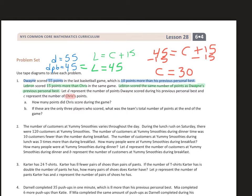There's lots of information, and it really is a lot easier if you just go one step at a time and you write things down. They gave us Dwayne scored 55 points, but then they decided to say let D represent the number of points Dwayne scored during his previous personal best. So I did DPB for that, and since it was 10 points more than his previous personal best, that means his personal best was 10 points less than his current score. So it's 45.